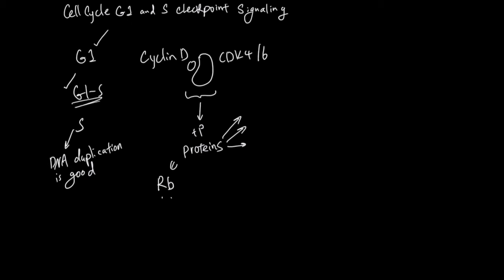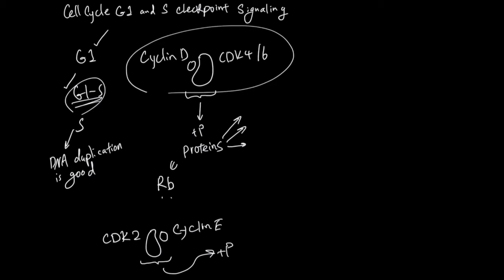And this G1S checkpoint uses CDK2 and Cyclin E. And this CDK2 Cyclin E complex, just like the CDK4/6 Cyclin D complex, will go and phosphorylate proteins needed for the G1S checkpoint. However, Cyclin E, if you look at its gene, is controlled by a transcription factor called E2F.